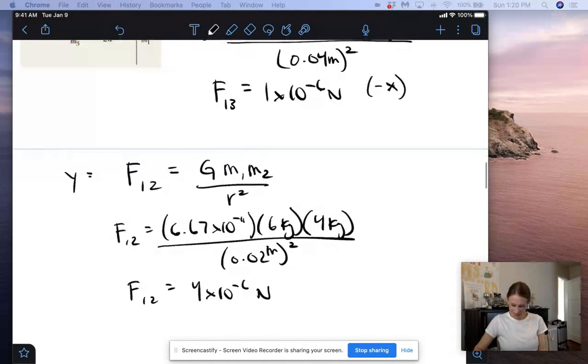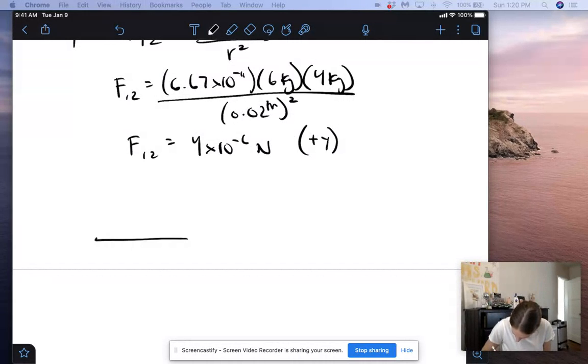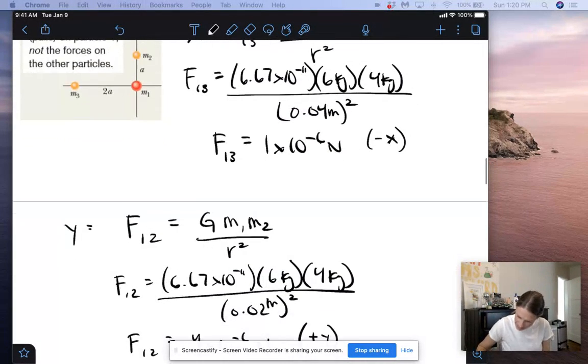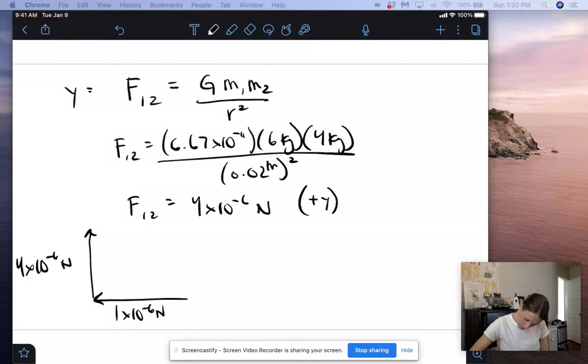So here, what we're going to do now is, since force is a vector, we know that we have to add these together, but one's in the negative x direction, one's in the positive y direction, so we have to use vector addition. So we have negative x, that was our 1 times 10 to the negative 6 newtons. And then our positive y, which is 4 times 10 to the negative 6 newtons. And so this will be, of course, not drawn to scale, but this is our resultant force.